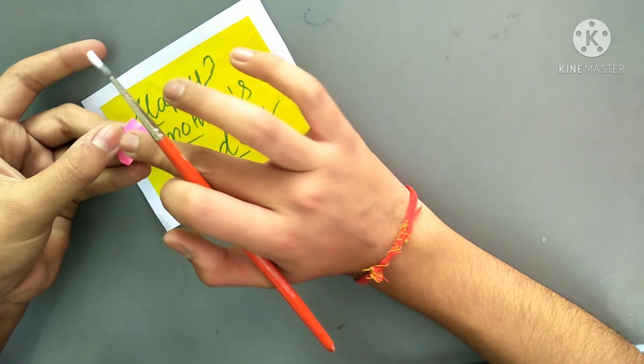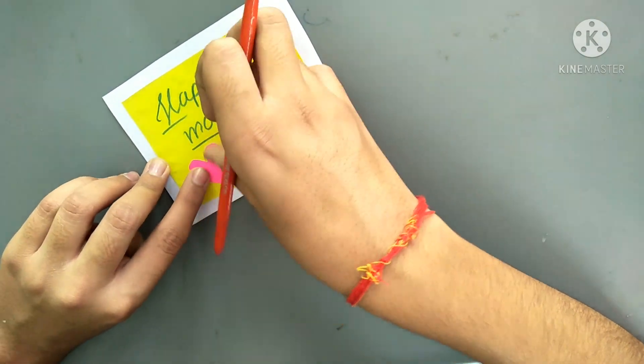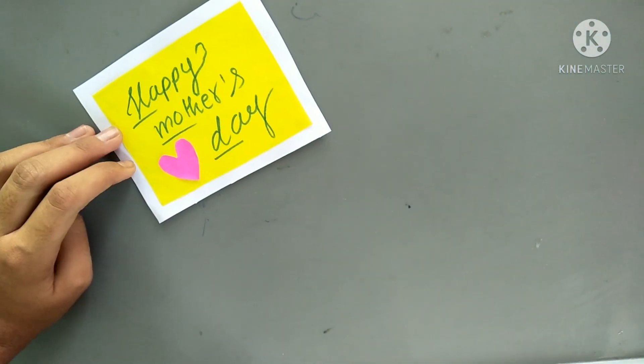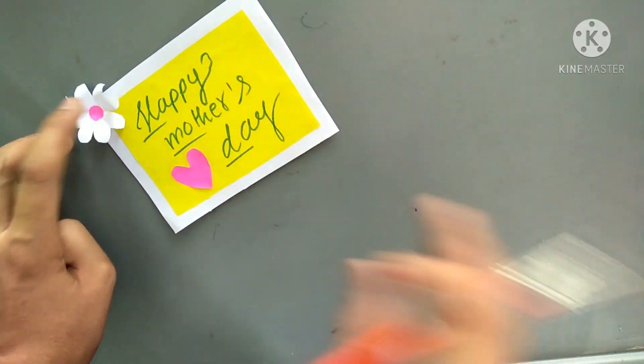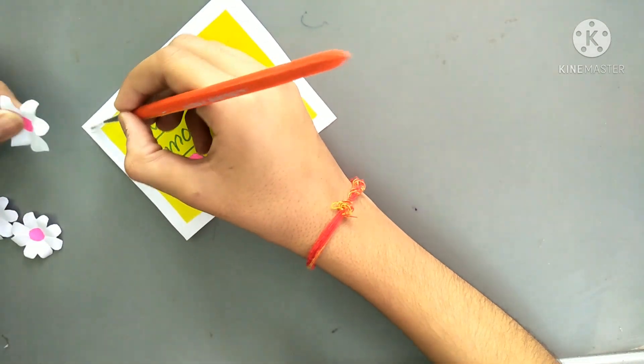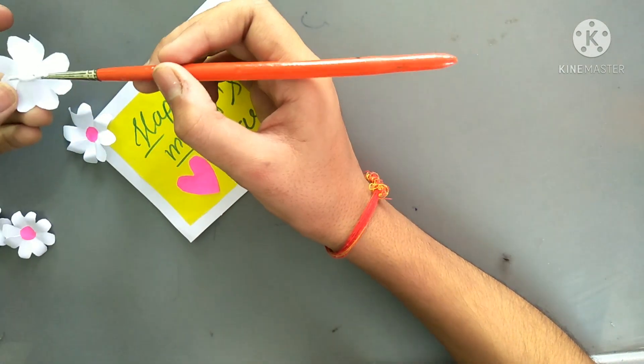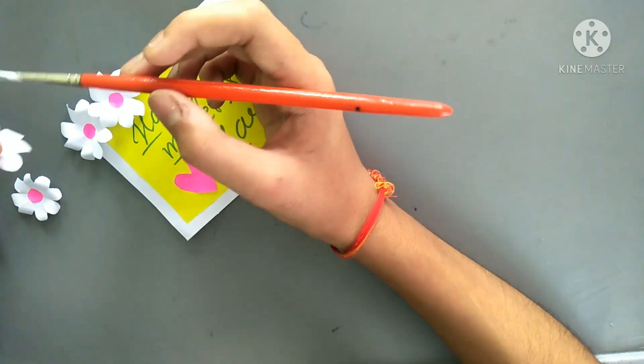Take the heart shape and paste it on the paper which we have made. Now take the flowers and paste it in the corners of the sheet like shown in the video.